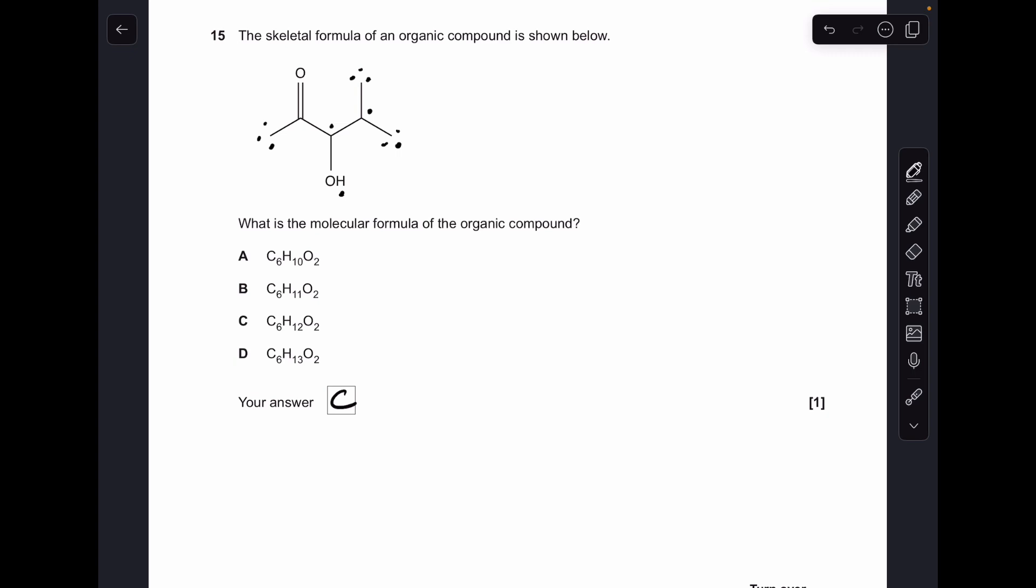Number 15, so just put dots where the hydrogens are. Don't forget about the OH hydrogen. You wouldn't believe how many people forget the most obvious one. So it is 12 hydrogens, so it was option C.